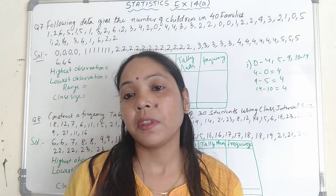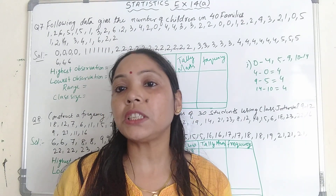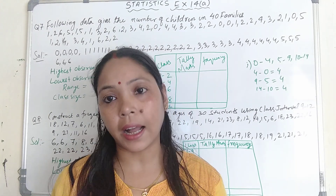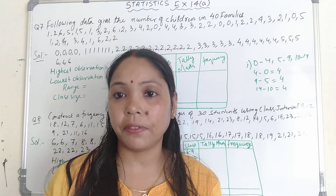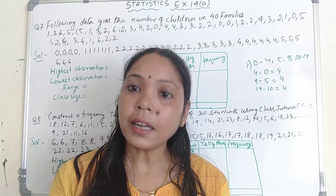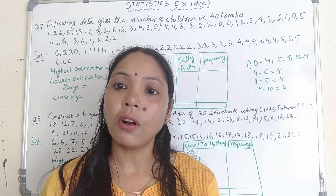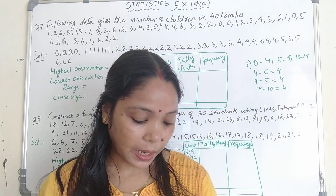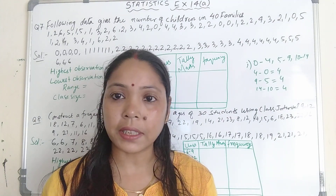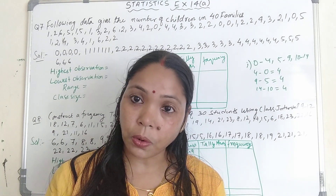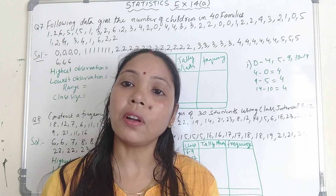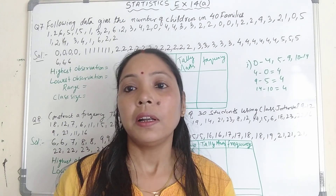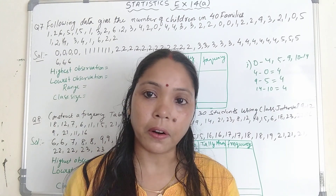Now for question number 5, if you see, some data are given. First of all you have to arrange the data in ascending form — ascending means lower to higher. After arranging the data, some questions are given, so you have to answer those questions from the data you already arranged in ascending order. Like, in the first question, what is the highest score? Find out the highest value. Similarly, what is the lowest score? Find out the lowest score from the data. Then what is the range? Range means highest score minus lowest score — that always gives you the range.